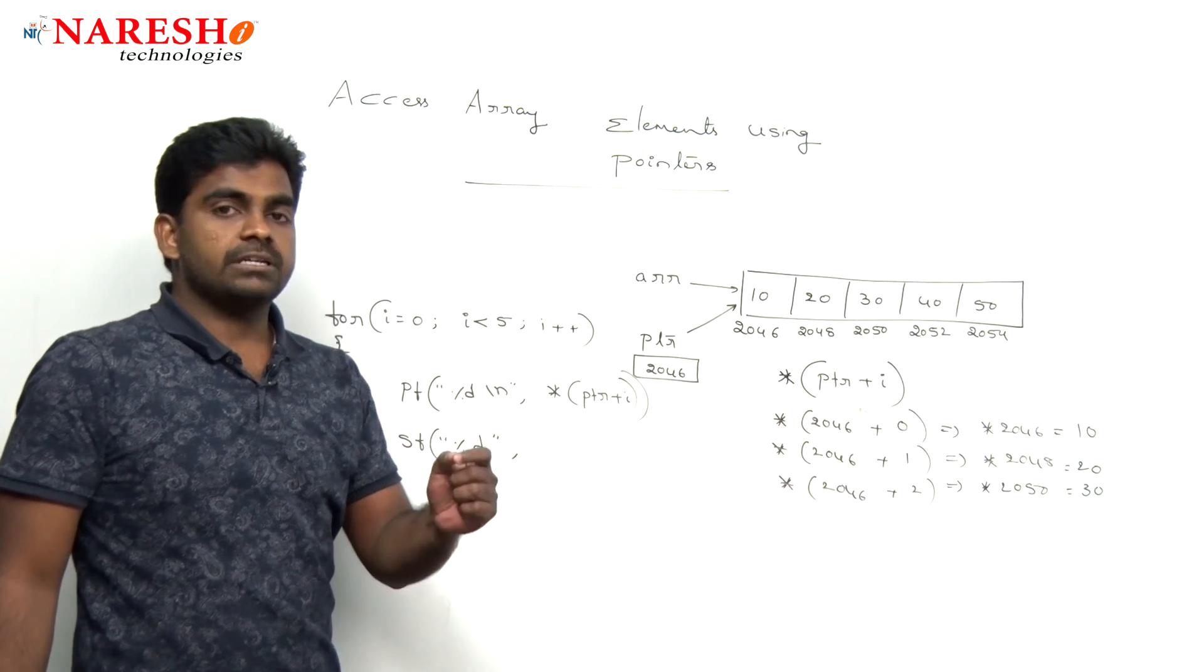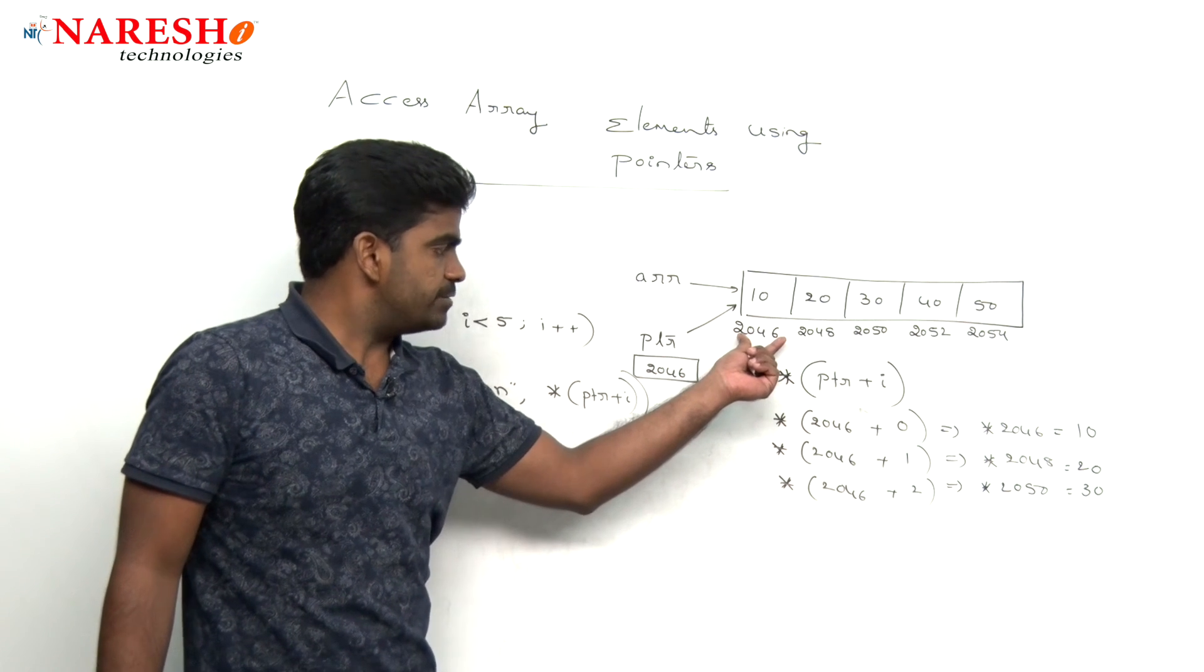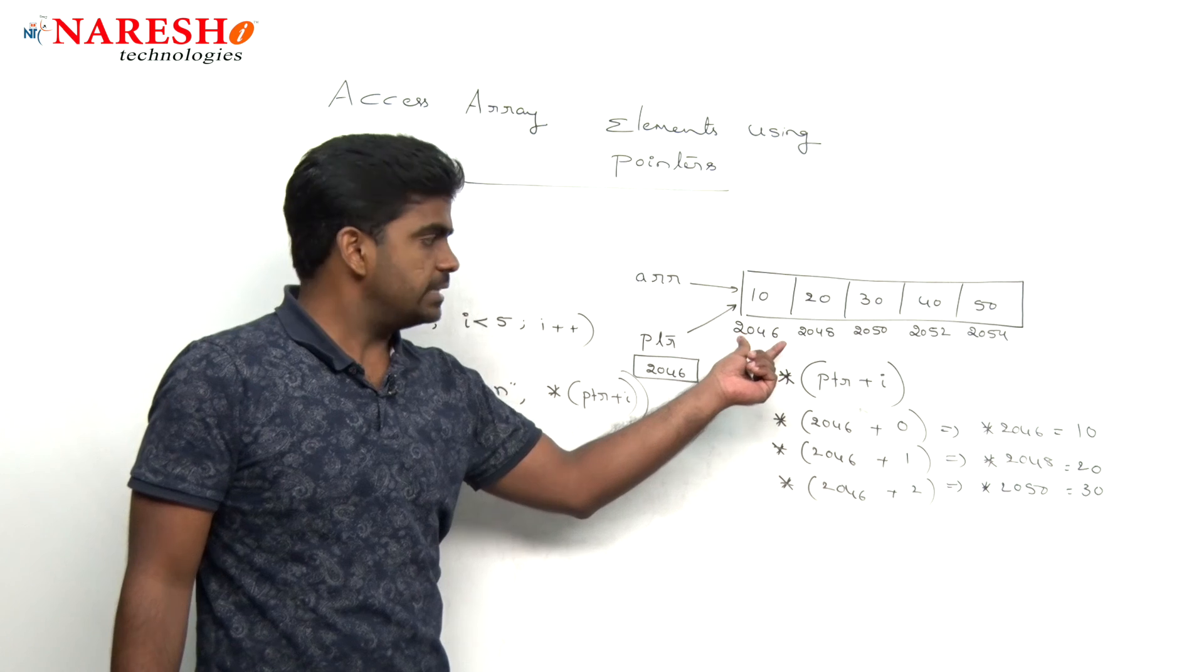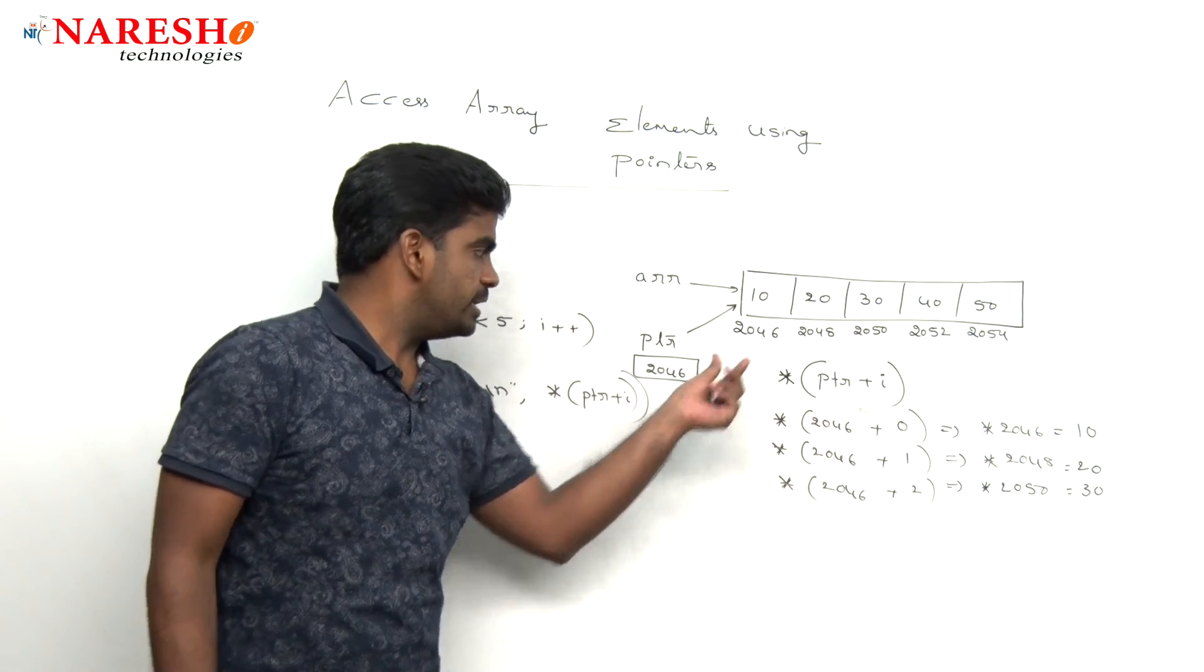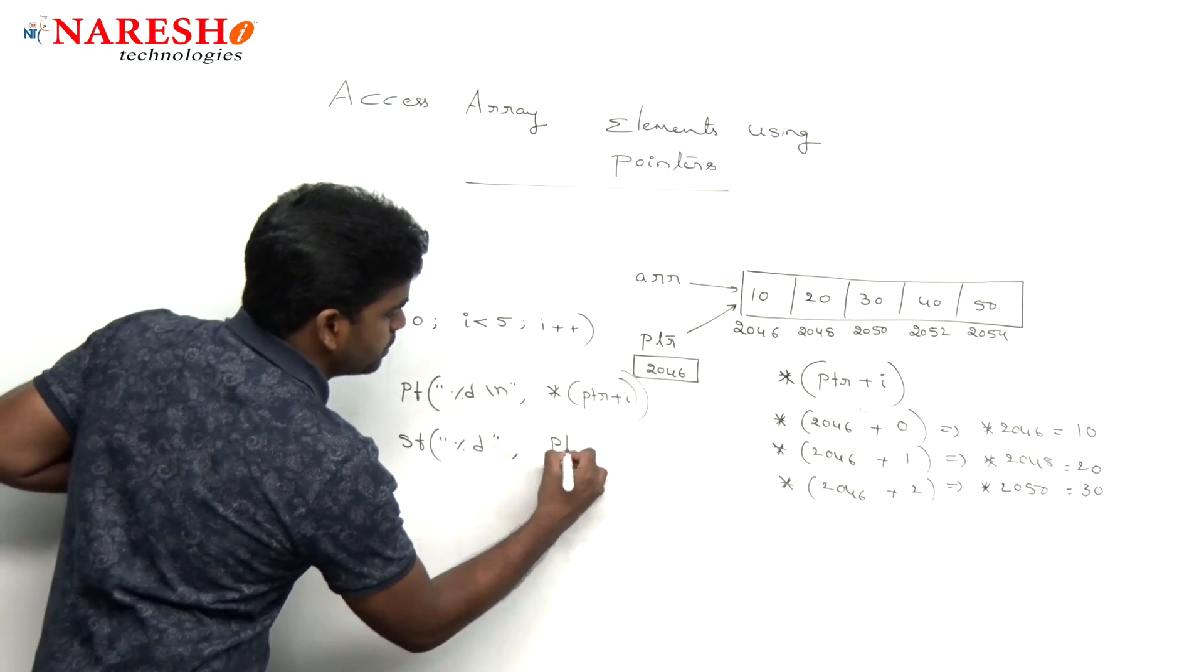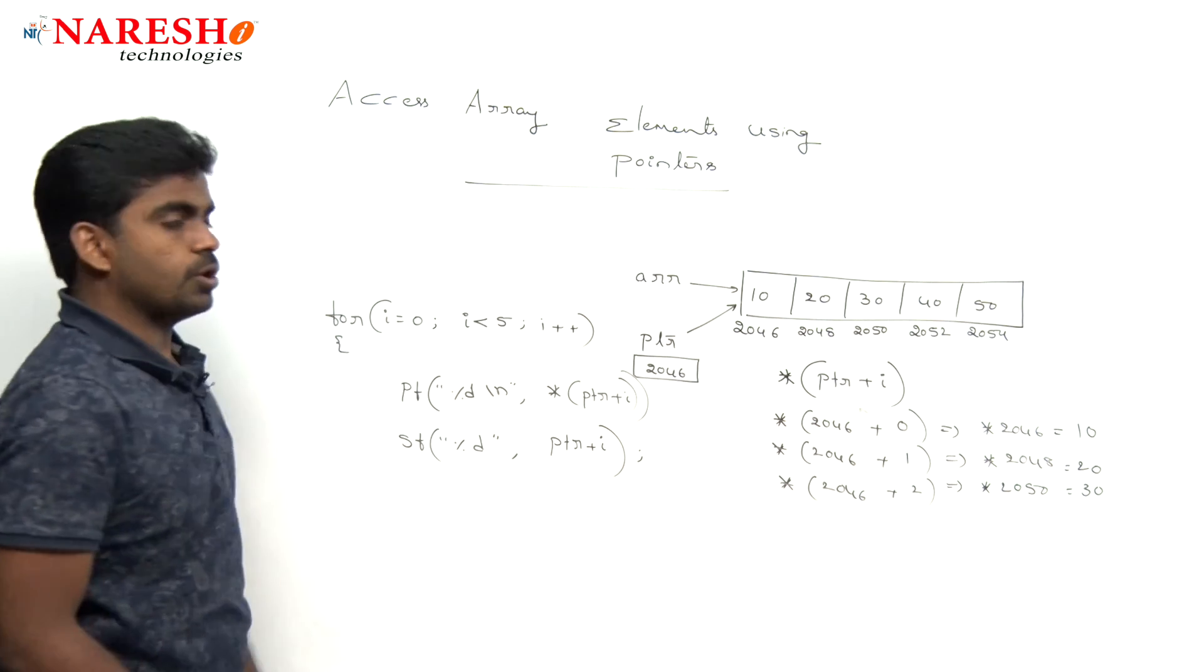For scanf function we need to specify the address, not the location. Whenever we specify that address 2046, the data will be collected and stored into that particular location. So here it is 2046, which means just PTR plus i. That pointer is not required.